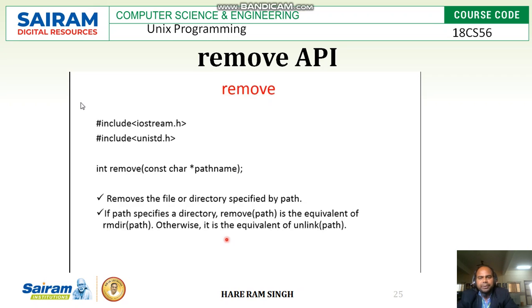The next API is the remove API. The remove API removes the file or directory specified by the path, meaning it deletes the path from the Unix operating system. Its prototype is: integer remove(const char* pathname).